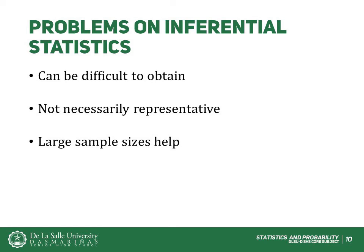Recall that the definition of a random sample is a sample in which every member of the population has an equal chance of being selected. This means that the sampling procedure, rather than the results of the sampling procedure, defines what it means for a sample to be random. Random samples, especially if the sample size is small, are not necessarily even roughly representative of the population. For example, if a random sample of 12 were taken from a population with an equal number of males and females, there would be approximately a 1 in 5 chance that two-thirds or more of the sample would be female. Such a sample would not be representative, although it would be random. Only with a large sample size will a random sample ensure an approximately representative sample.